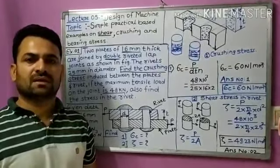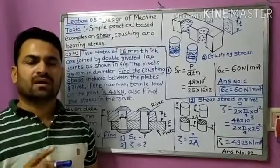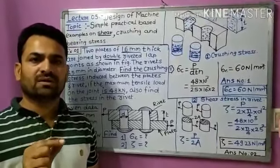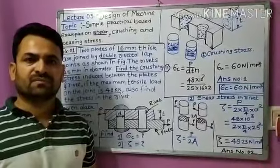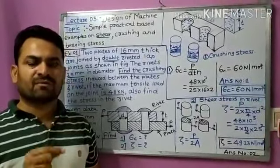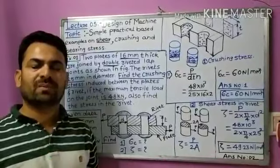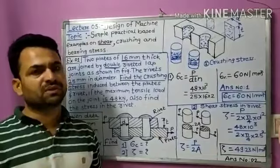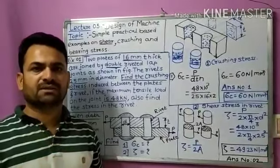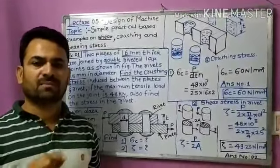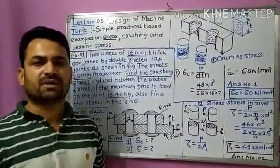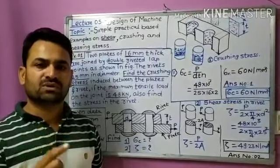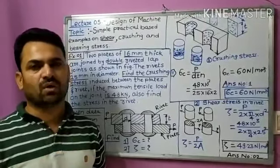As we discussed in the previous video, shear stress is produced when a tangential force acts on a component in equal and opposite directions. For crushing stress, two components are in contact with localized compression and no relative motion. For bearing stress, two components are in contact with localized compression but some relative motion exists between them.